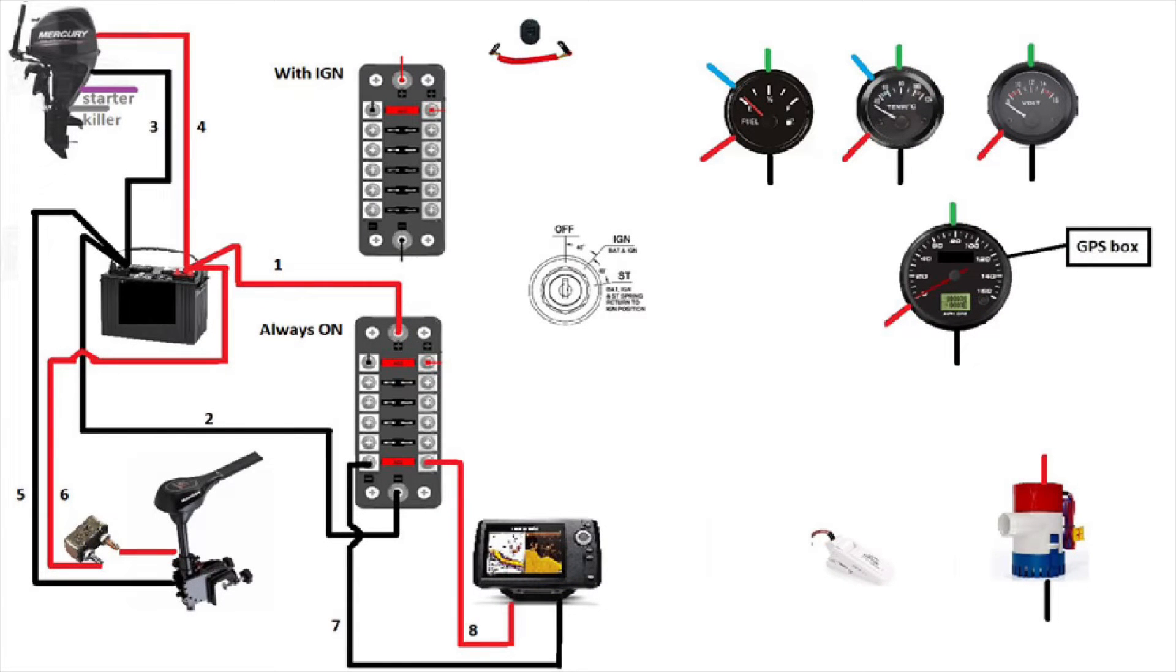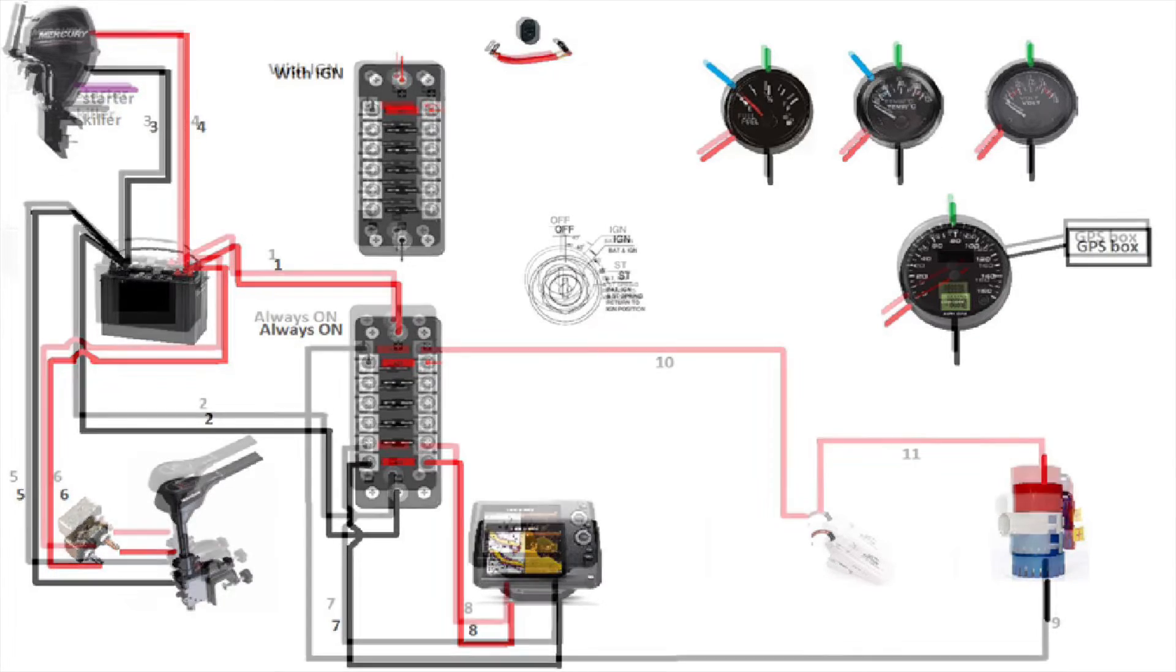With that done, now we can connect the fish finder. I connected it on the always-on fuse box, so even if the ignition is not on, the fish finder can be on. I like it that way.